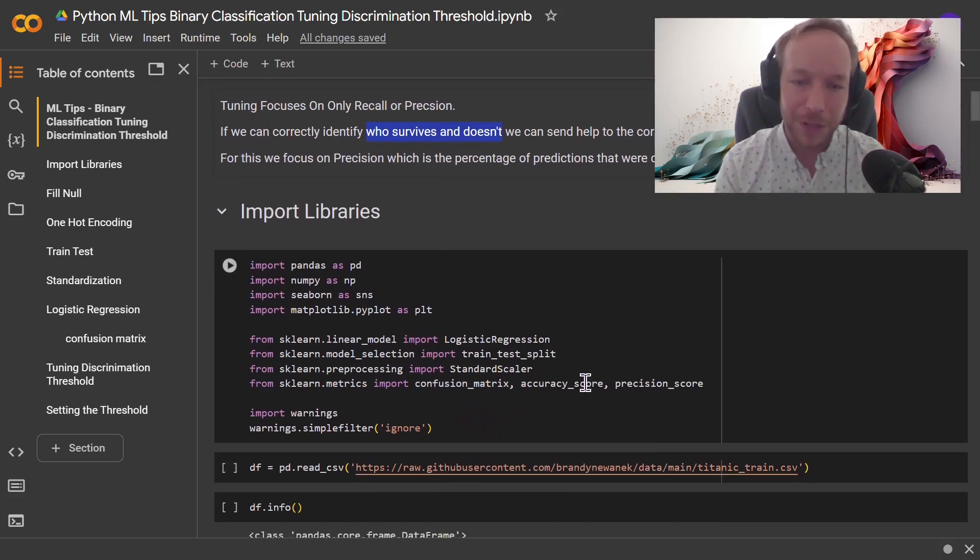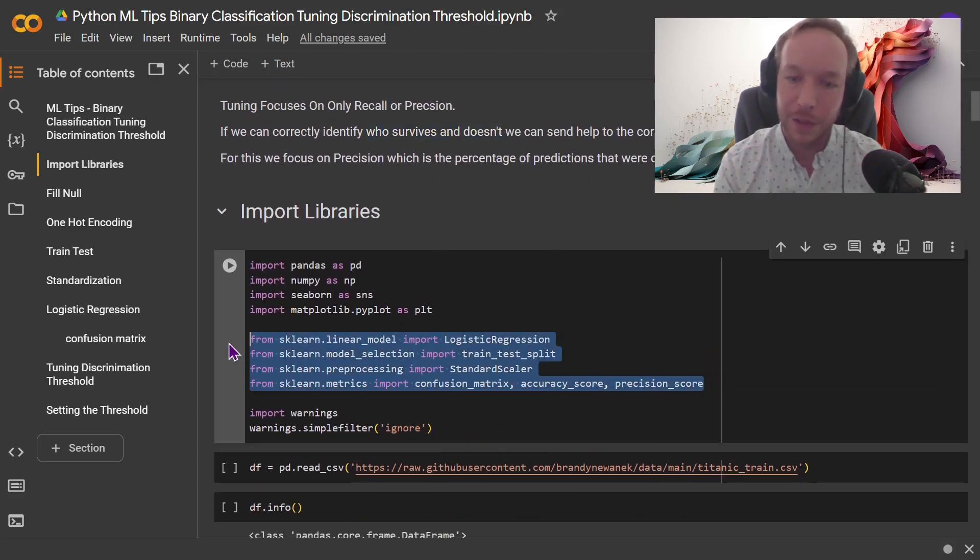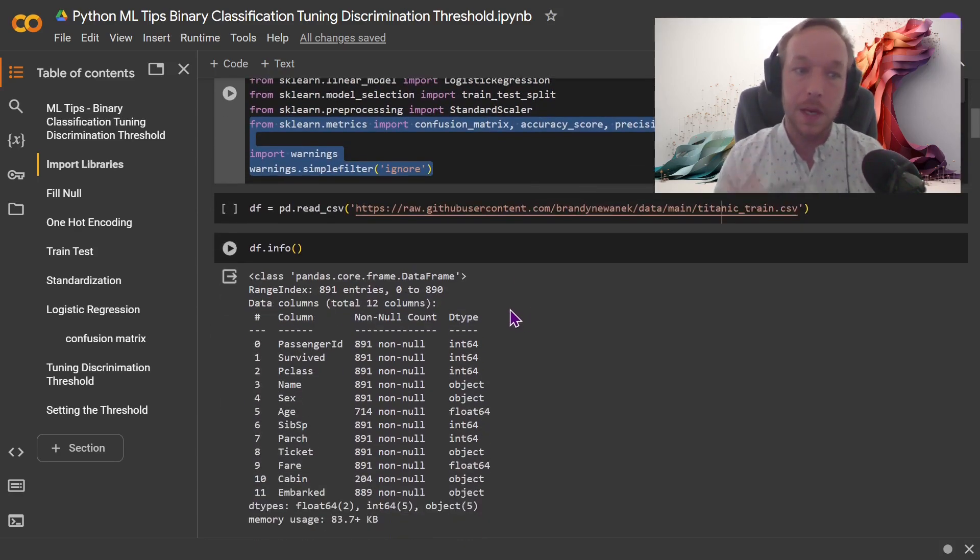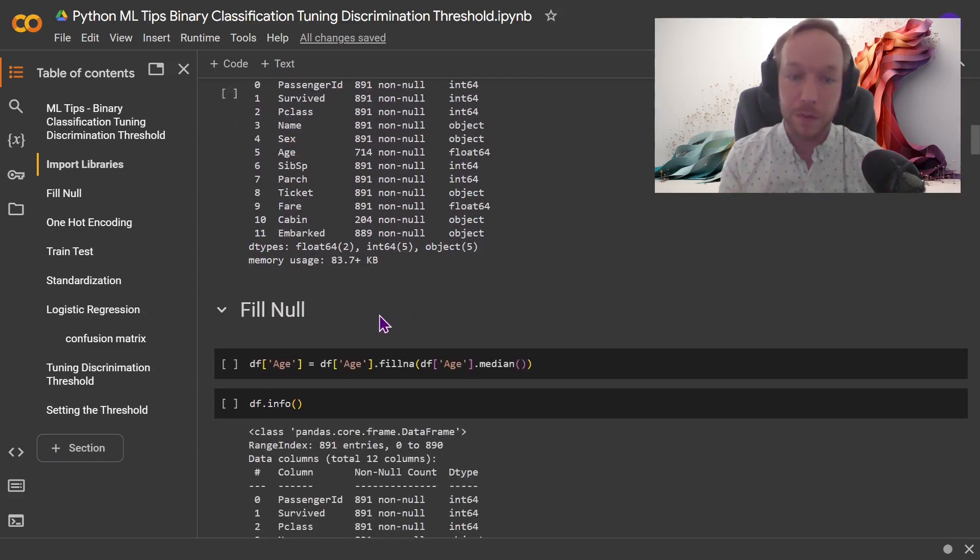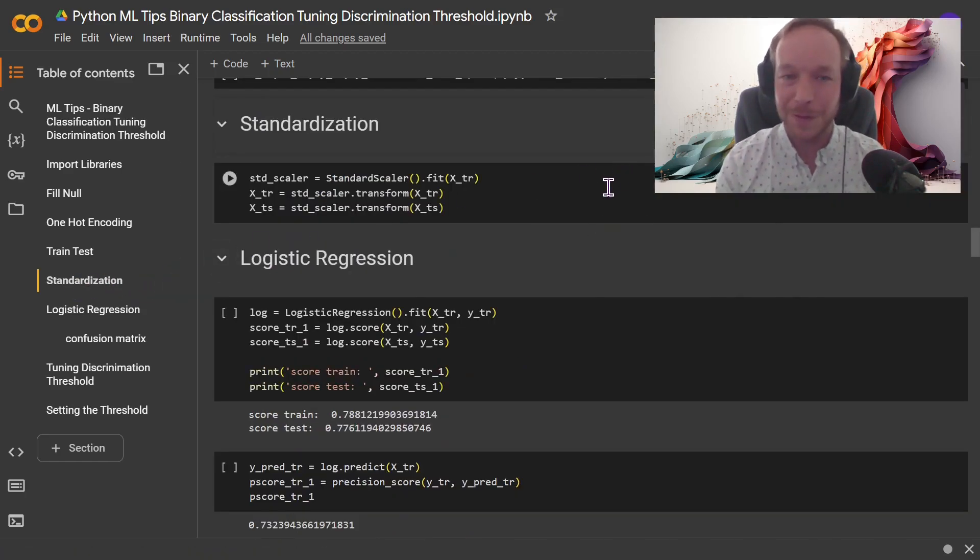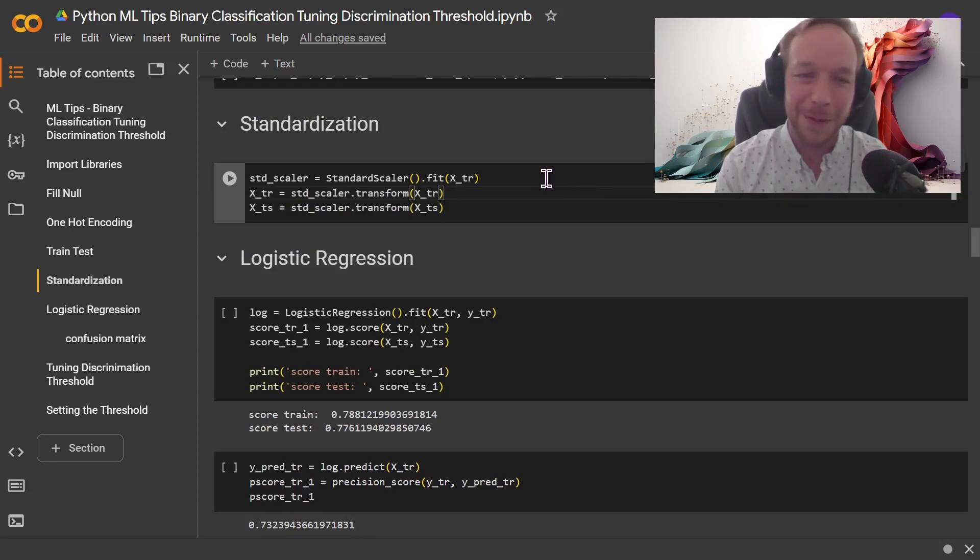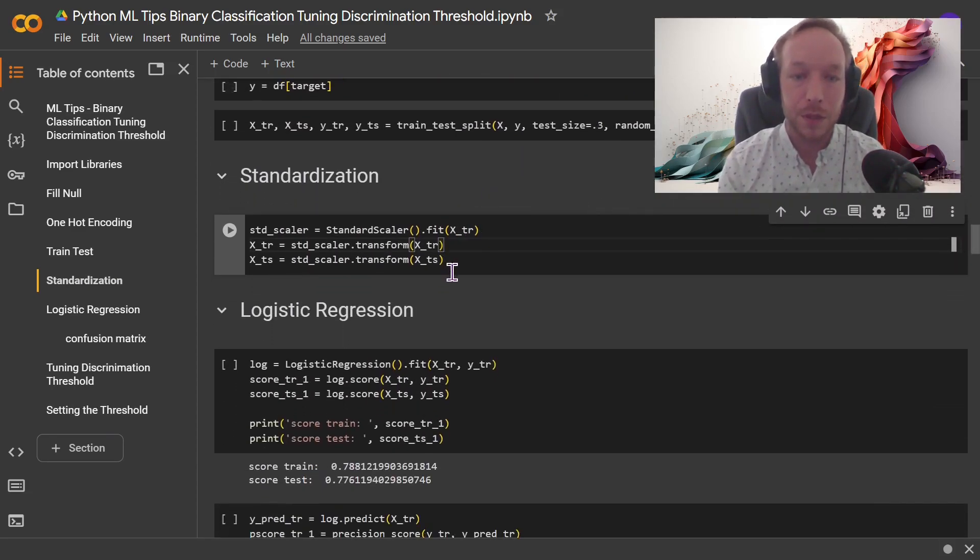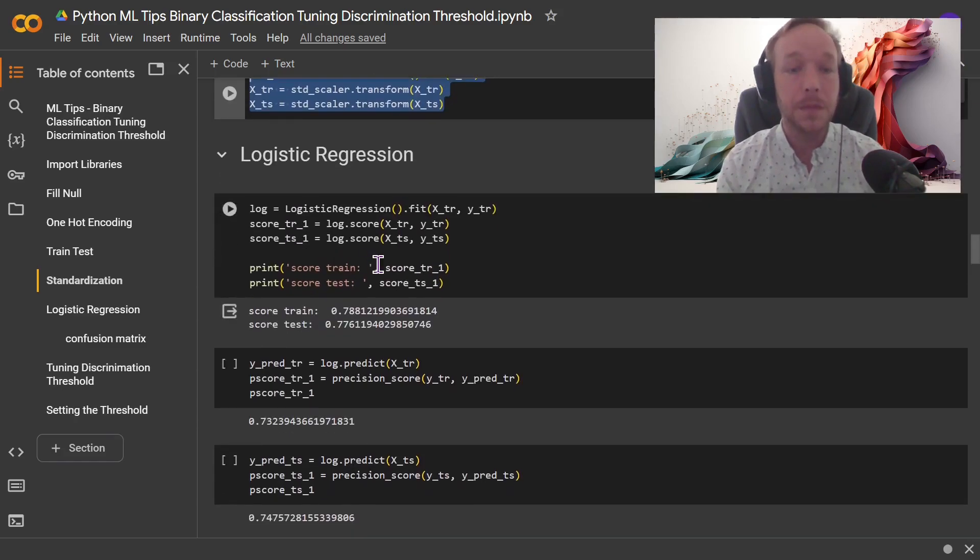Okay, so importing our standard data science libraries and some sklearn libraries that we'll be using today, ignoring warnings and going through the Titanic dataset. So I'm going to skip over a lot of the pre-filtering, or sorry, the pre-processing, you can look at it all. Here, we're here today to talk about the discrimination threshold. So I'll leave the pre-processing of the Titanic dataset to you to figure out. If you're in this video, I have a feeling you understand this already.